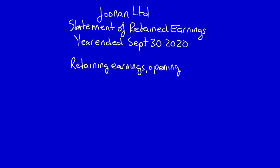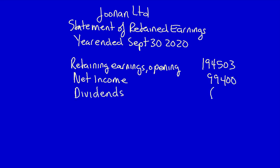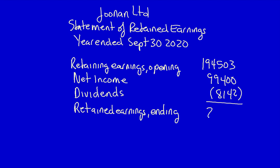From the listing of accounts, that's $194,503. We then add net income of $99,400 and deduct dividends of $8,142. We end up with retained earnings ending at $285,761. Notice that the statement of retained earnings focuses only on the retained earnings column from the statement of changes in equity.